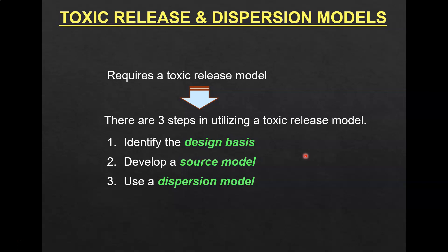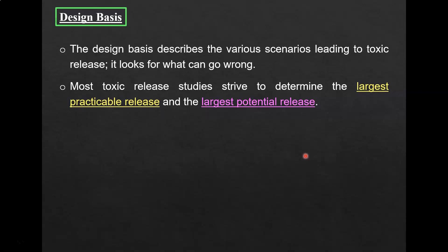As a revision, the design basis describes the various scenarios leading to a toxic release — essentially, what can go wrong with a particular design. Most toxic release studies strive to determine the largest practical release and the largest potential release as a worst case scenario. This is how the toxic release model helps us to prevent a scenario from getting worse.